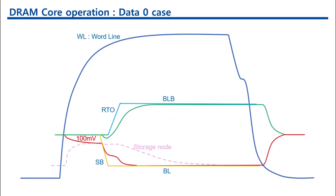Because of the charge sharing, the voltage of the storage node changed into 0.6 volt if the cell data was 1 and 0.4 volt if the cell data was 0.